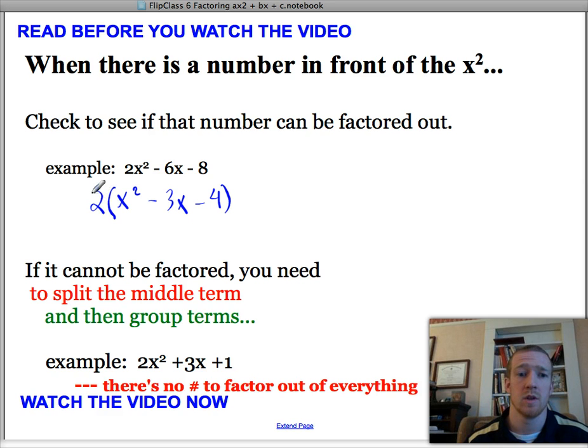Alright, so now since we took out that 2, we still have to keep that 2 there, but we can now factor this just like we would have factored our trinomials, right? x squared minus 3x minus 4. What multiplies to negative 4? 4 and 1. And what adds to a negative 3? It's going to be a negative 4 and a positive 1.